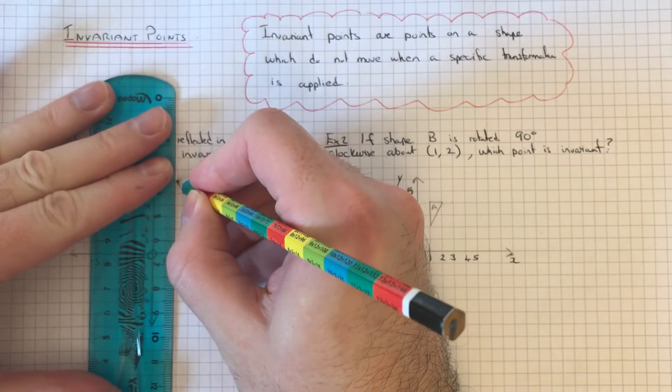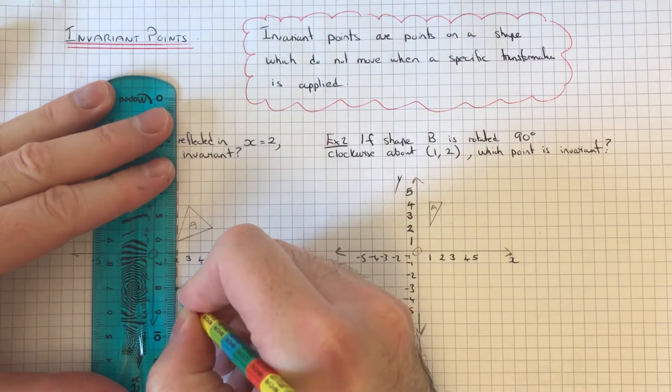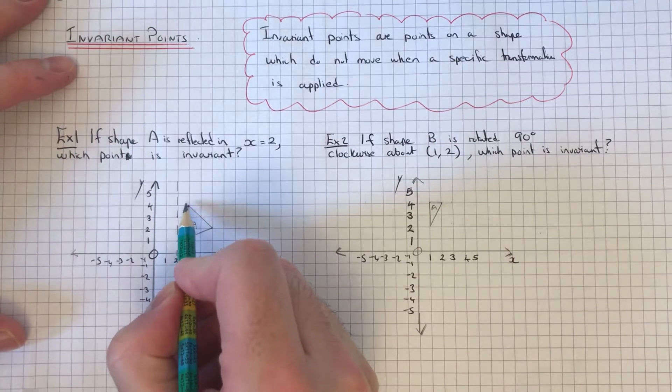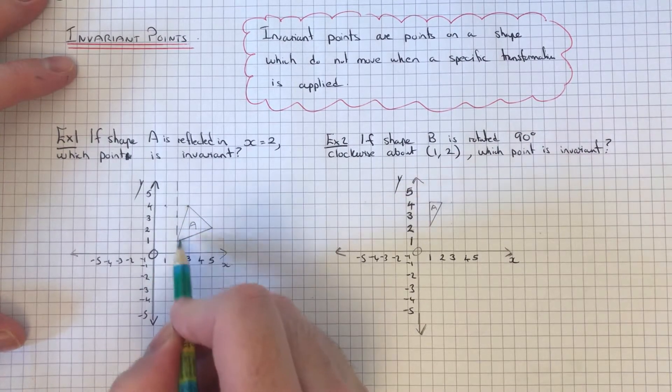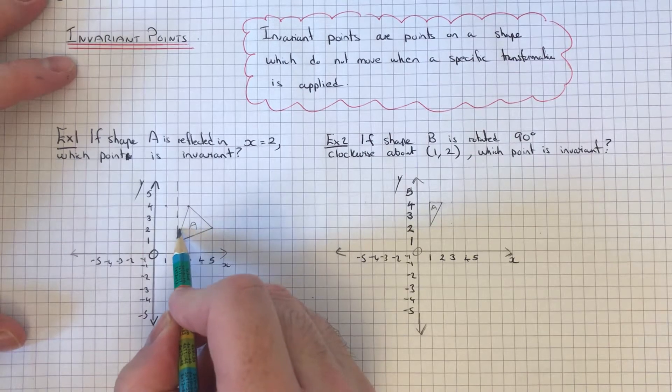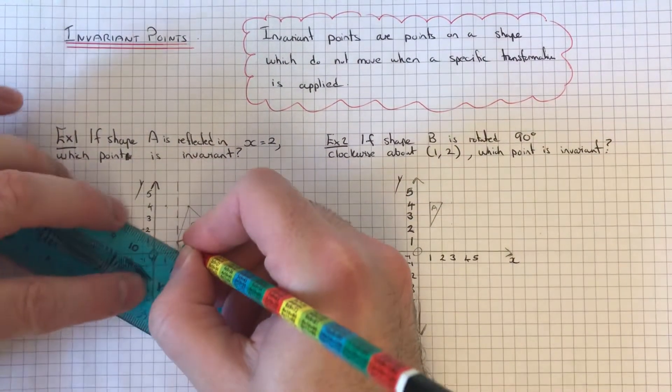equals 2. So x equals 2 goes through the x-axis at 2. Reflect our vertices: 1, 1, this one doesn't move, 1, 2, 3, 1, 2, 3. Join our points up.